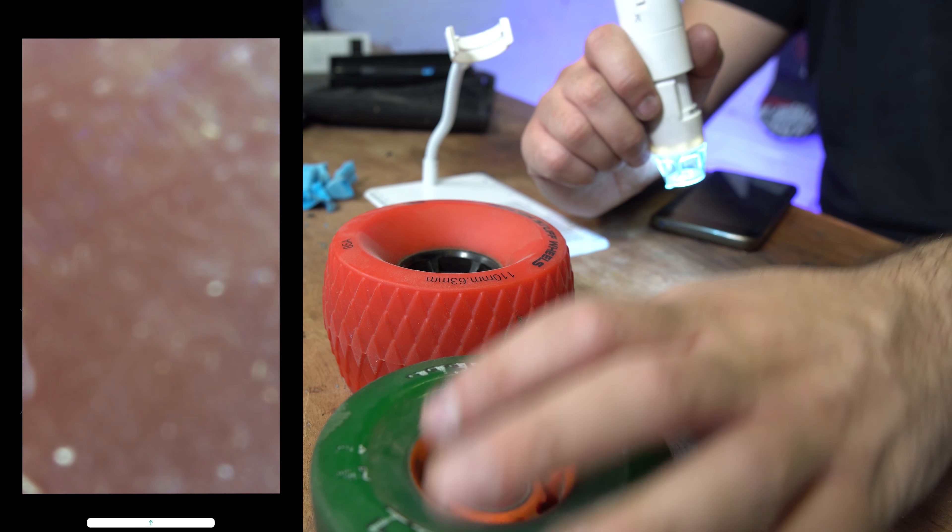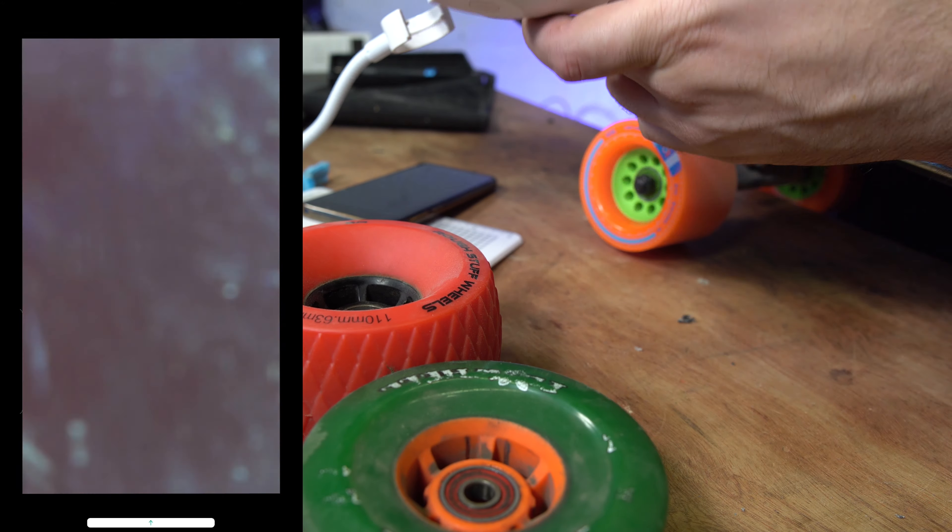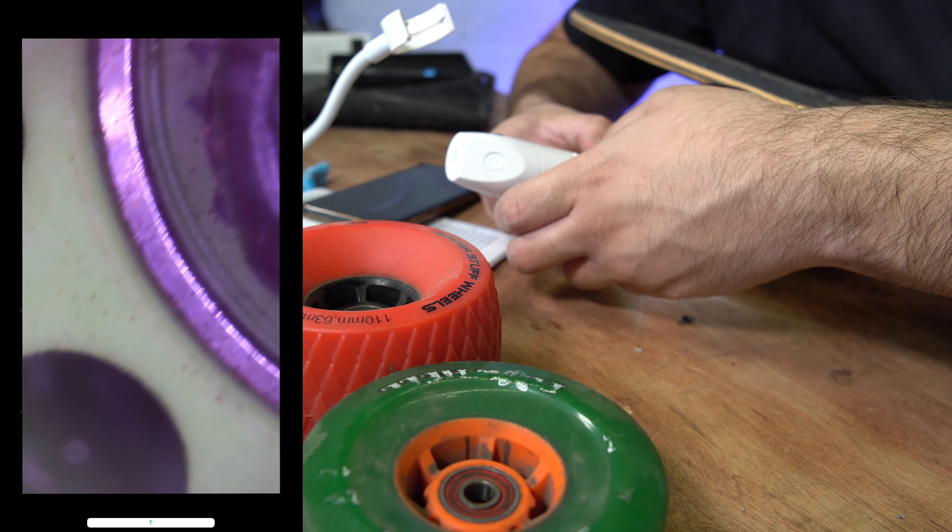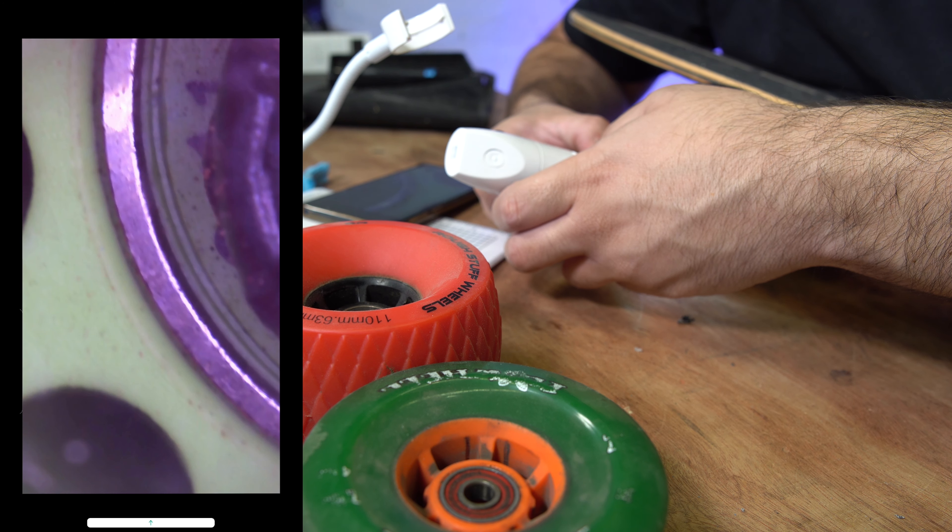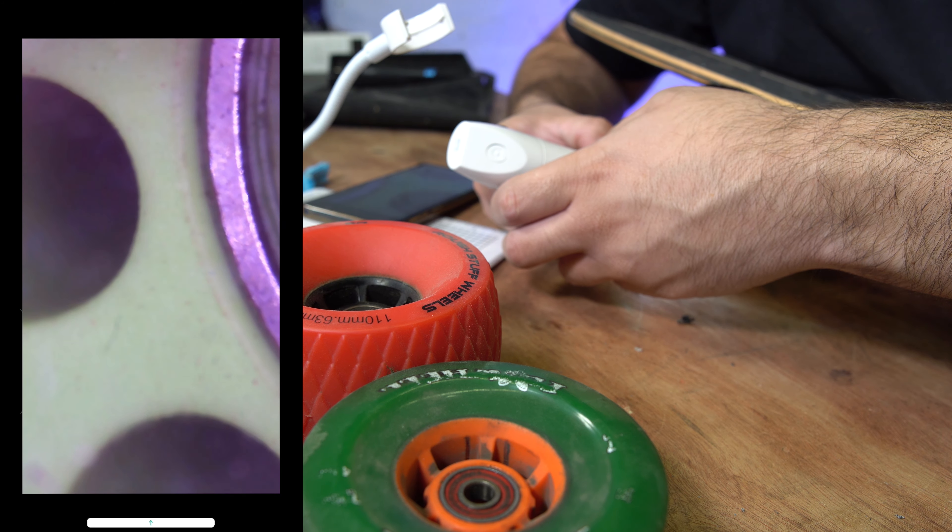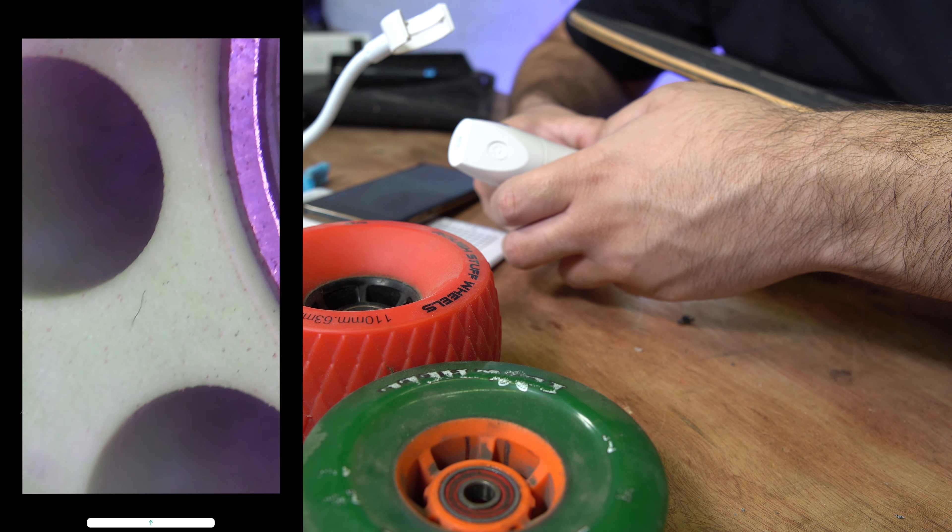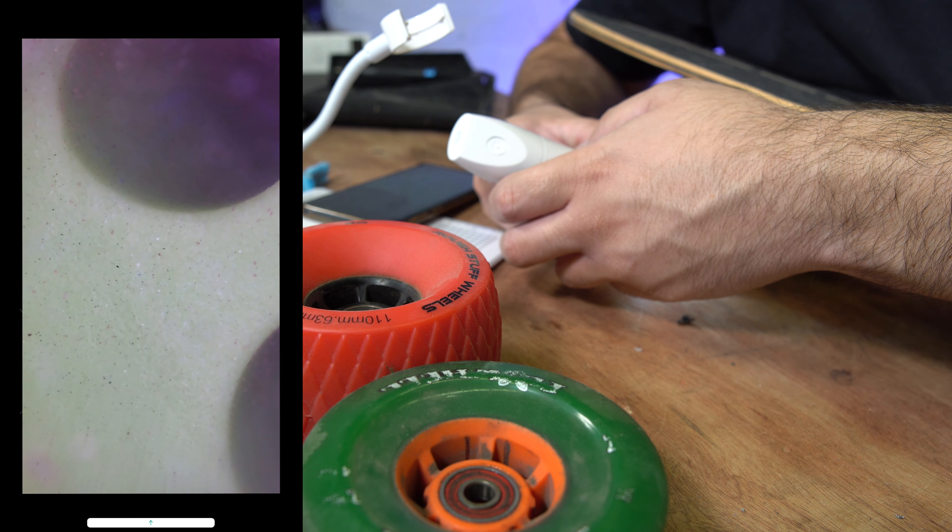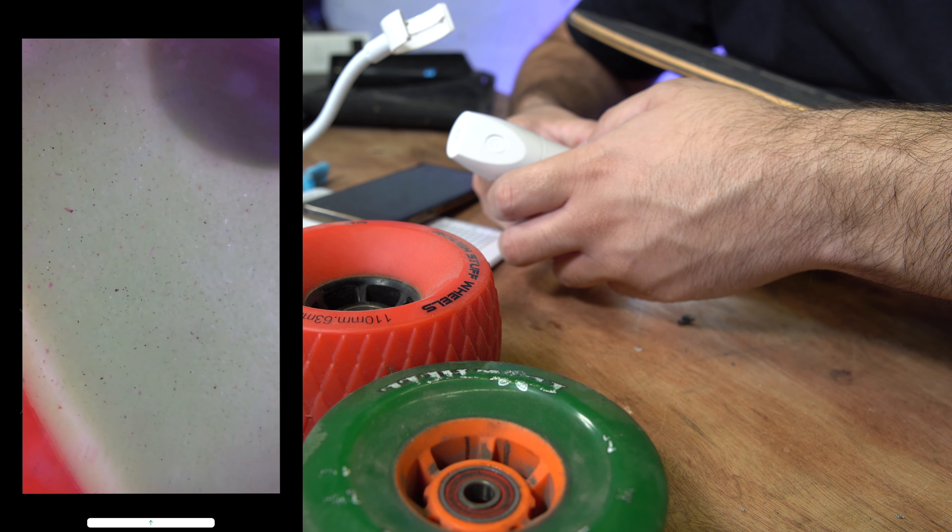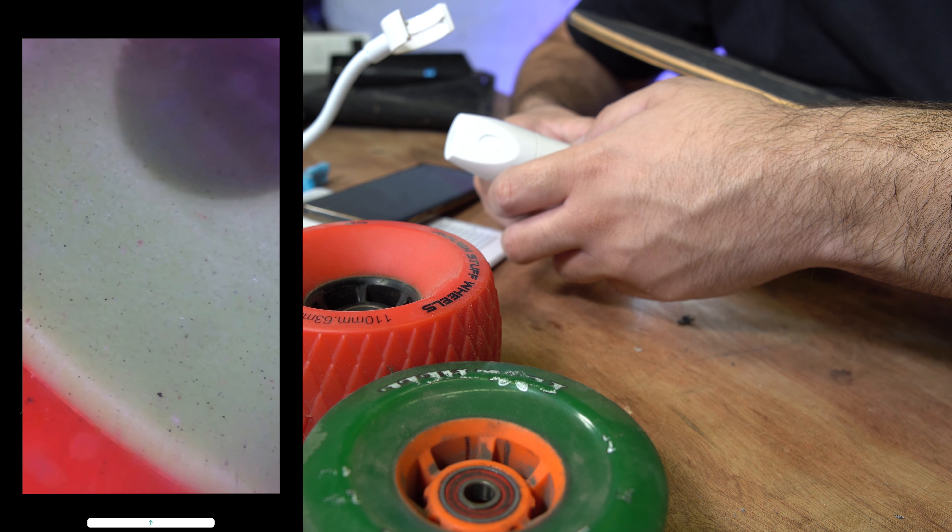I've got another wheel. Let's try Kegel. Again, the plastic on this is different, very similar to the ABEC type plastic. See if I can focus this. Very similar to the ABEC plastic, isn't it?